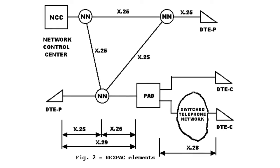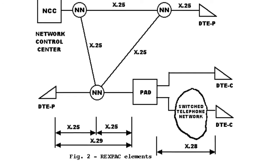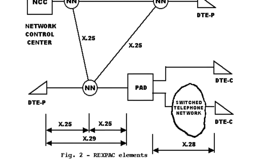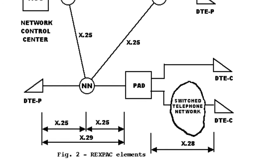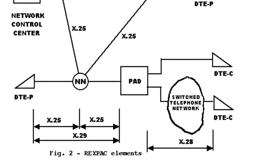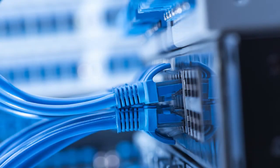PADs come in different configurations. Some PADs support 8 or more asynchronous DTE connections and have multiple DCE interfaces for maximum configurability. Typically, you connect your asynchronous host to the PAD using RJ45 connectors on twisted pair cabling. The PAD then connects to a channel service unit/data service unit, which interfaces with the X.25 connection using a serial interface such as RS-232 or V.35.